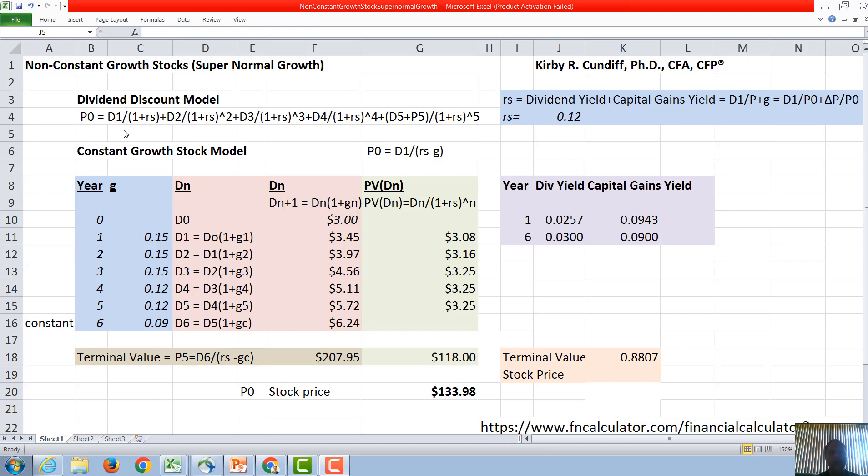In our example here we're going to look at a stock with a required rate of return of 12 percent, a dividend D0 that was just paid of $3, and then the following growth rates. The first three years a growth rate of 15 percent, slowing down for the next two years to a growth rate of 12 percent, followed by a constant growth rate of 9 percent.